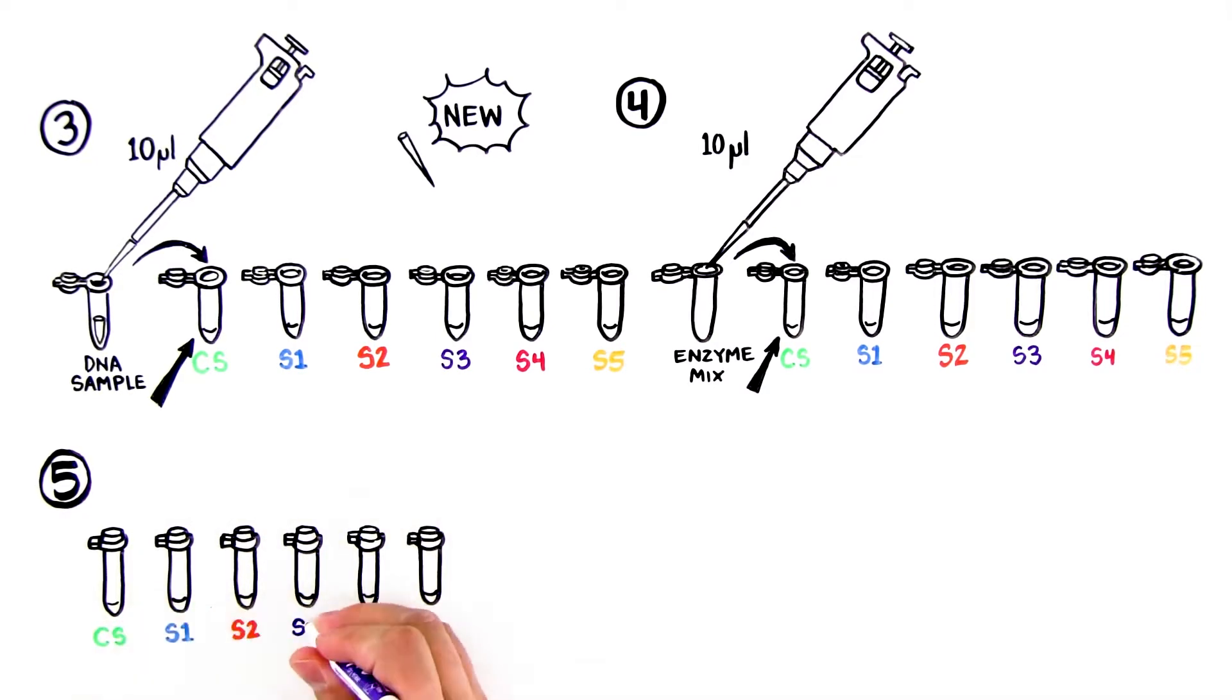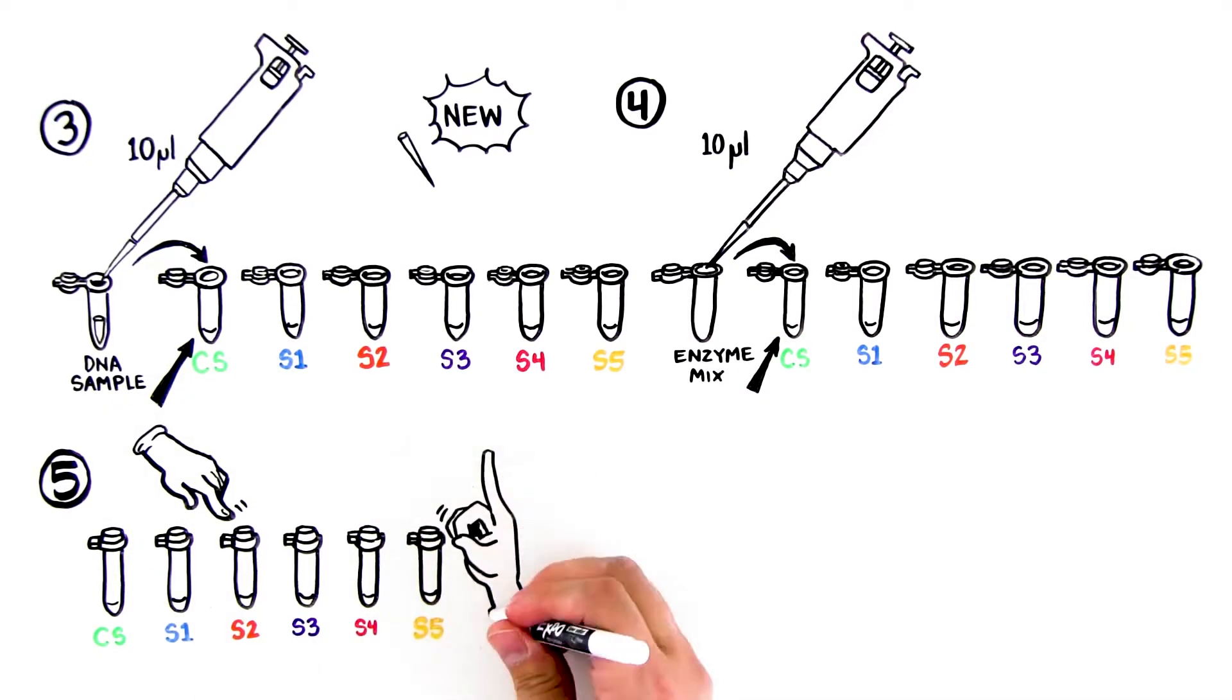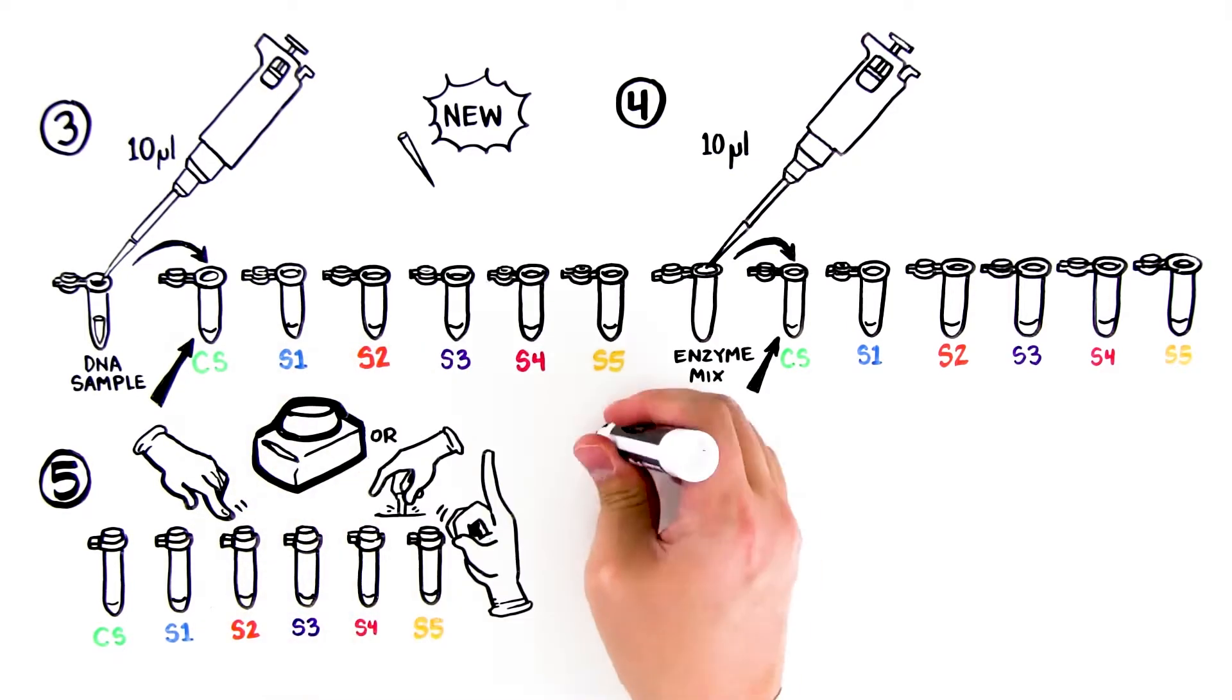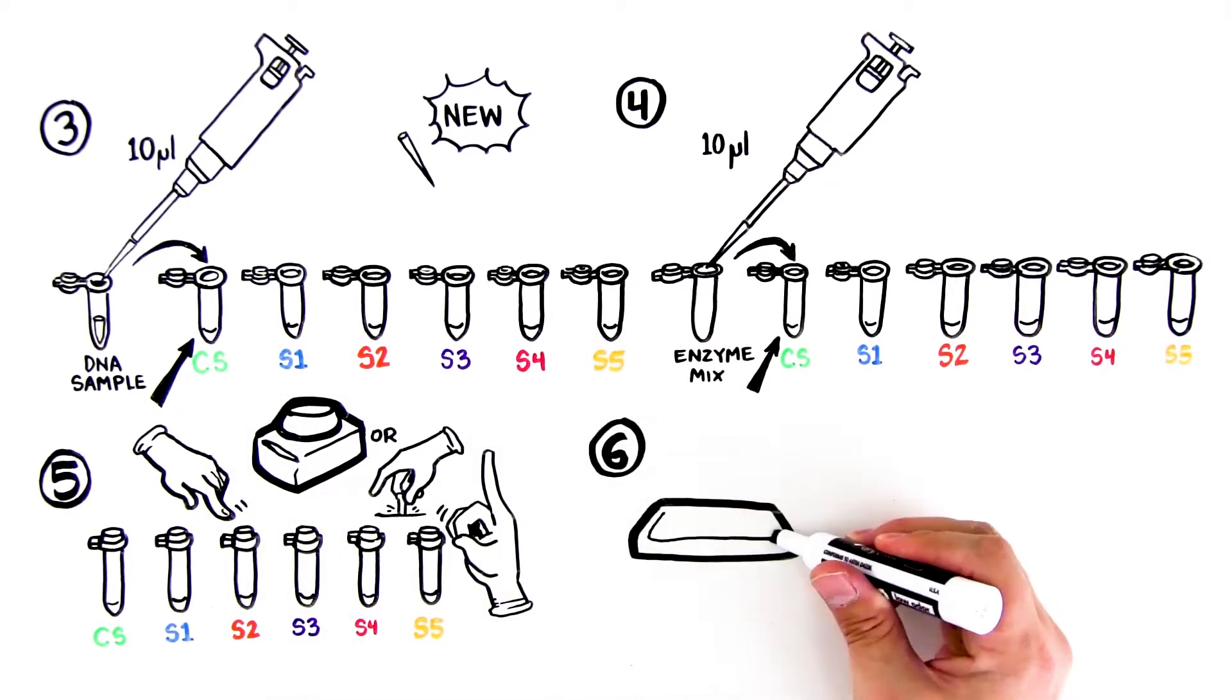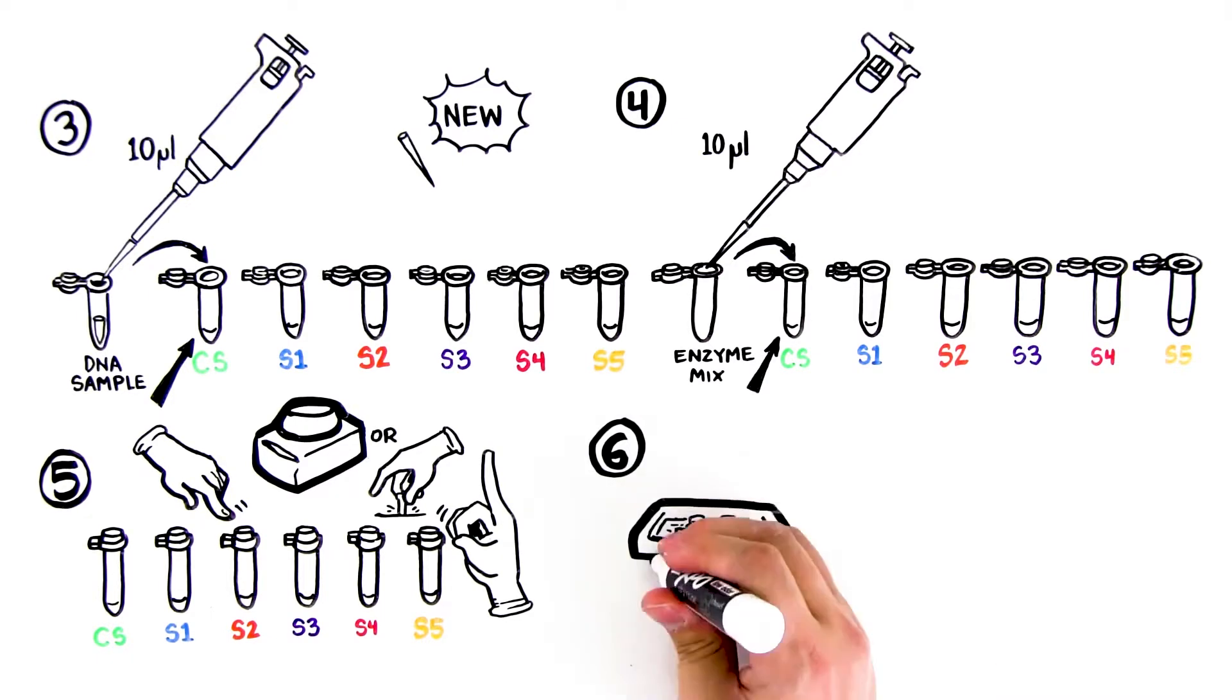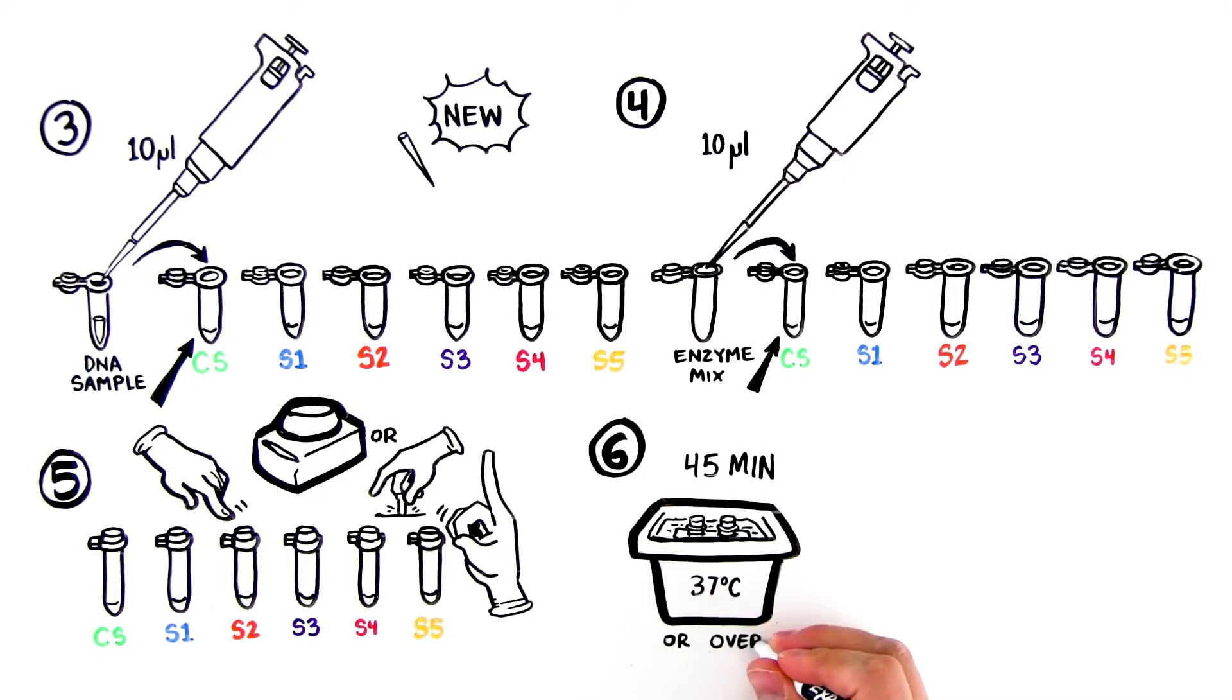If a microcentrifuge is available, pulse spin in the centrifuge to collect all the liquid in the bottom of the tube. Otherwise, tap the tube on a tabletop. Sixth, place the tubes in the floating rack and incubate 45 minutes at 37 degrees Celsius or overnight at room temperature in a large volume of water heated to 37 degrees Celsius.